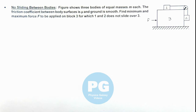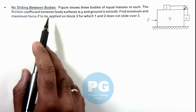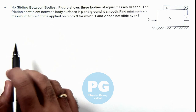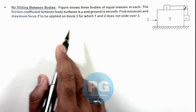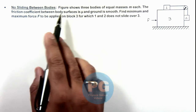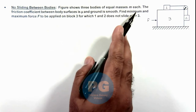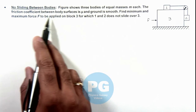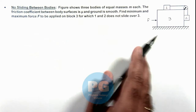This illustration is about no sliding between bodies. Based on such illustrations we will see many cases in future. Here the figure shows 3 bodies of equal masses m each, and the friction coefficient between body surfaces is mu, and the ground is smooth.